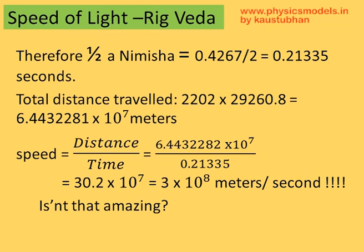The total distance traveled as per that stanza is 2,202 yojanas into 29,260.8 meters, which becomes 6.44 × 10⁷ meters. Speed equals distance divided by time, so the speed of the sun's rays is 6.4433 × 10⁷ divided by 0.21335, giving us 30.2 × 10⁷ — that's nothing but 3 × 10⁸ meters per second. Can you believe that? The ancients were so close to the modern figure of 2.98 × 10⁸ meters per second.